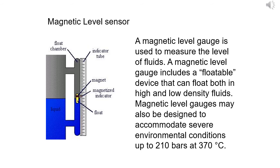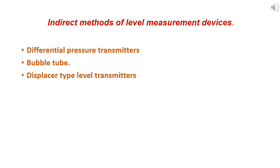Another classification is indirect method of level measurement devices. These include differential pressure transmitters, bubble tube, and displacer type level transmitters or level measuring devices.